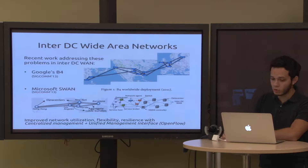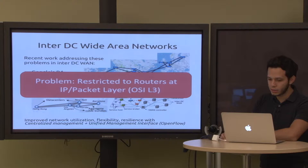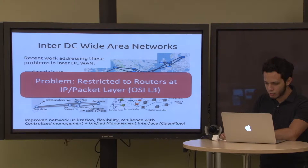Both Google B4 and Microsoft SWAN follow the same pattern: they improve network utilization, flexibility, and resilience using centralized management with a unified management interface — in both cases the OpenFlow protocol. However, a common problem with these two systems is that all traffic engineering decisions are restricted to routers and the IP or packet layer, OSI layer three.